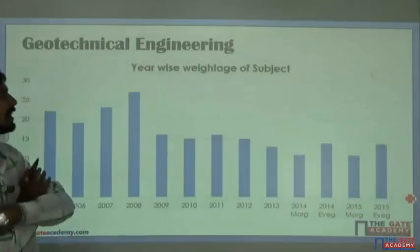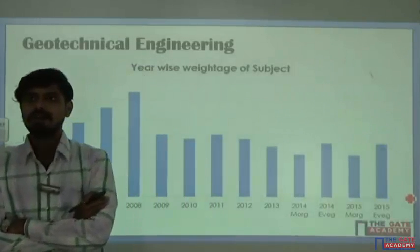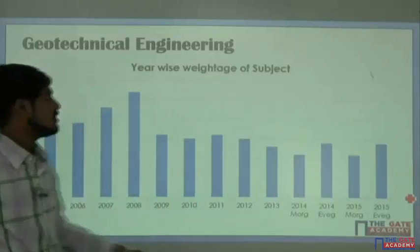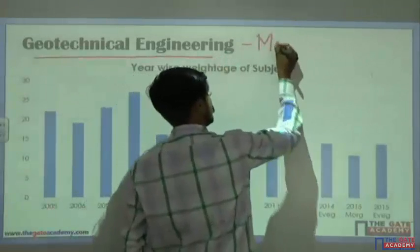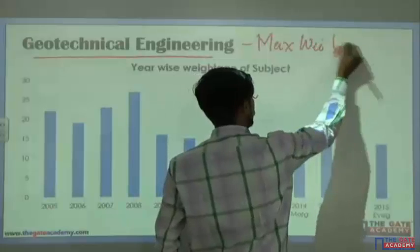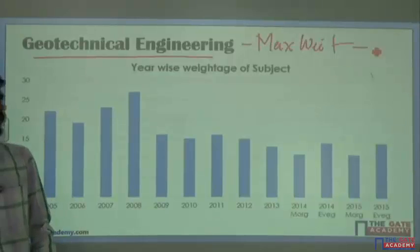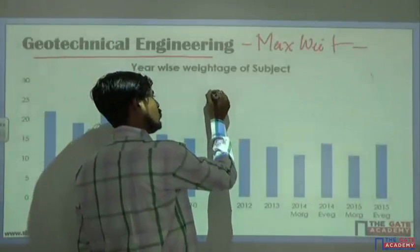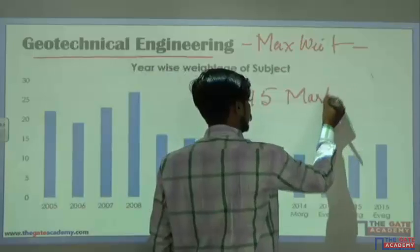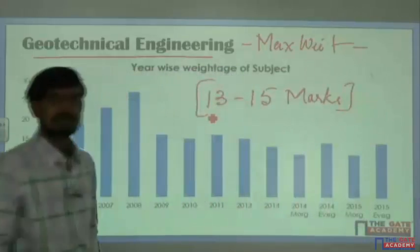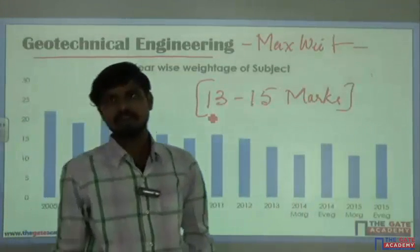Now coming to the yearwise weightage of the subject. I hope you know the GATE syllabus correctly. This is the subject which is having the maximum weightage. On average you will get around 13 to 15 marks from this subject, that is soil mechanics or geotechnical engineering.